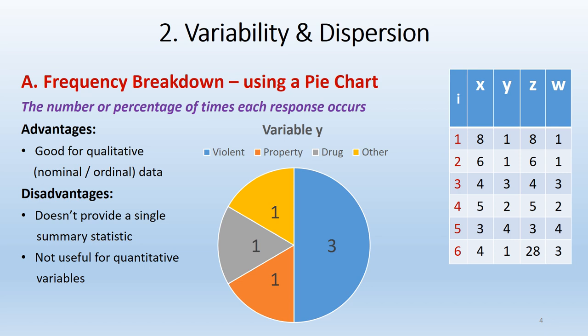I don't recommend using a pie chart for quantitative variables, because with quantitative variables you usually have many individual number values. If you're measuring age across 1,000 people, you'd have a bunch of tiny slices, which gets ugly and overwhelming. It works nicely for qualitative variables when you only have three, four, five, or six categories. Now we'll move on to the more sophisticated measures of variability and dispersion, which are focused on interval and ratio level variables.